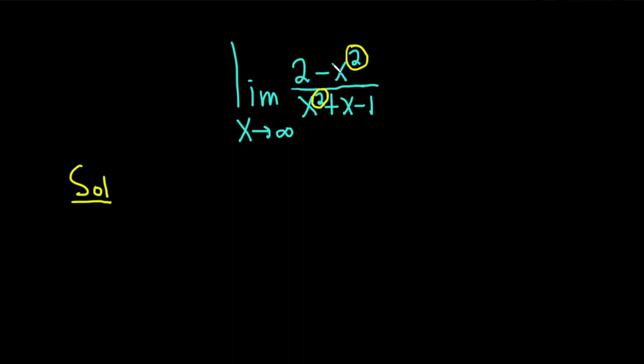The leading coefficient in the numerator is the number in front of the term of highest degree. So it's negative 1. This is negative 1 over, and then in the denominator the leading coefficient is 1. It's negative 1 over 1, which is just negative 1. And that's going to be the answer.